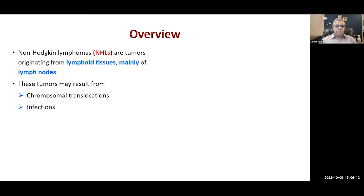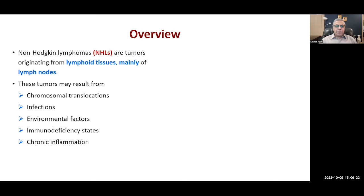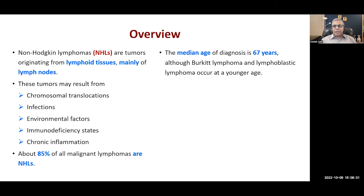Causes include infections, particularly viral infections, environmental factors, immunodeficiency states such as HIV and AIDS or immunosuppressive therapy, and chronic inflammation. About 85% of all malignant lymphomas are NHLs, and the median age is 67 years. But some, like Burkitt lymphoma, occur at a younger age.